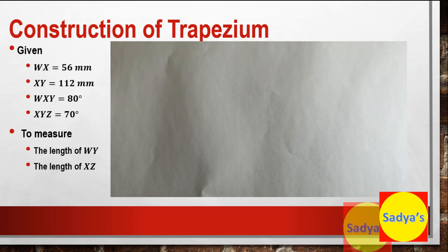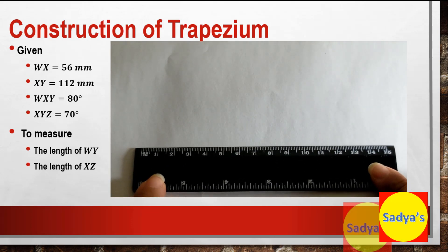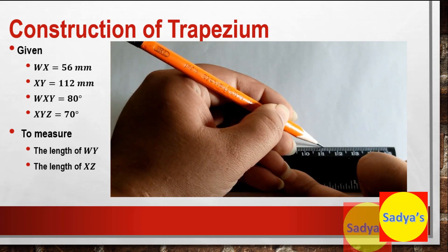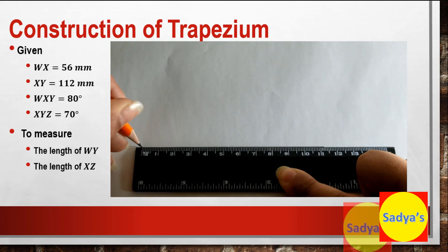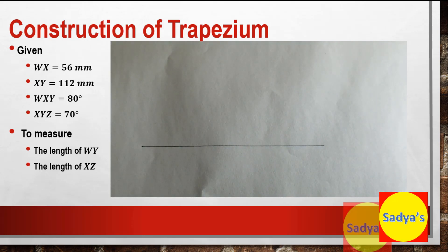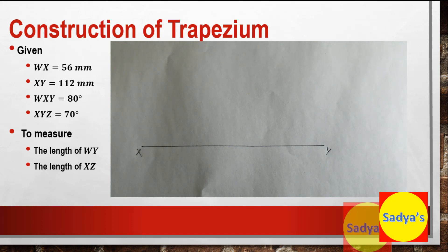In this question we have to construct a trapezium WXYZ. Since the angles X and Y are given, I'll be taking XY as the baseline. They have given us that XY is equal to 112 millimeters, which converts to 11.2 centimeters. So let's draw a line XY equal to 11.2 centimeters — this point will be X and this point will be Y.